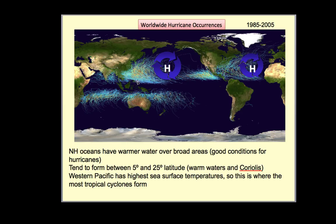Looking at worldwide hurricane occurrences — all the tracks from 1985 to 2005 around the globe — you can clearly see the highest density is over in the Western Pacific. To get the formation of a tropical cyclone, you need a big area of warm water, and that's just what they have over there. Trade winds blow warm water, and the Western Pacific warm pool exists there. Hurricanes feed by evaporating warm water, taking that water vapor into the clouds, condensing it, and using a percentage of that latent energy to translate it into kinetic energy and rotation in the storm.